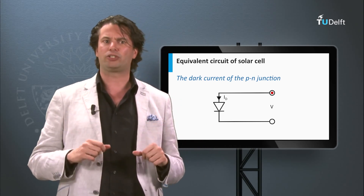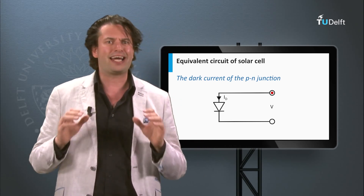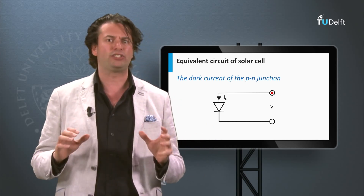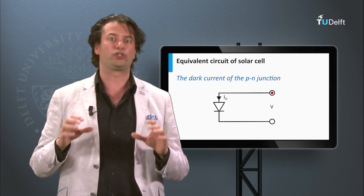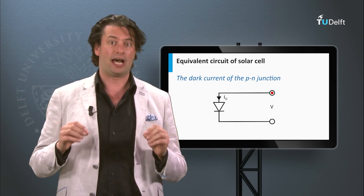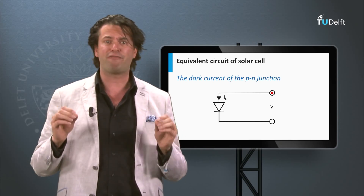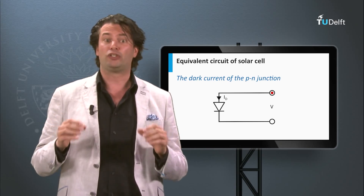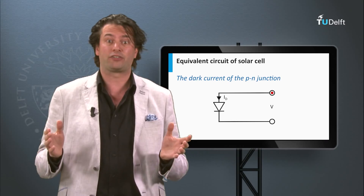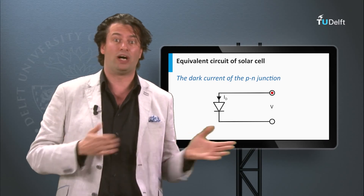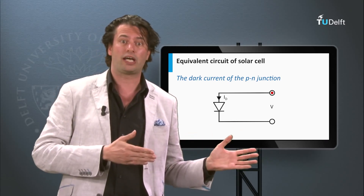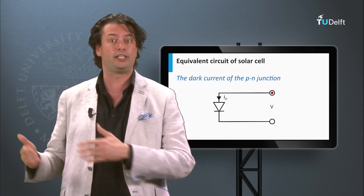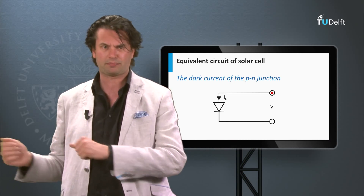P-N diodes are electrical elements used in many electrical circuits, and their main function is to allow an electrical current in one direction and block an electrical current in the other direction.